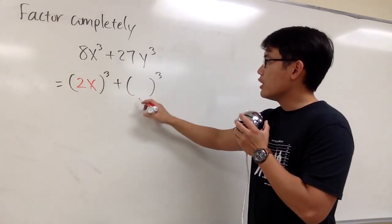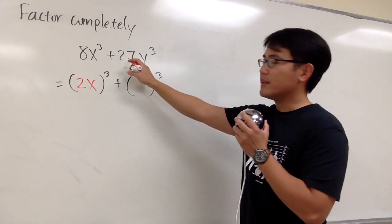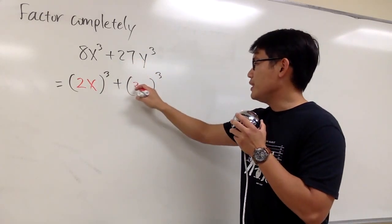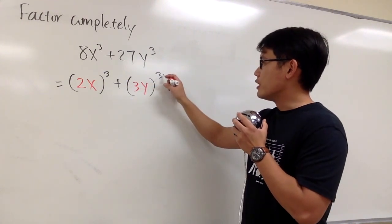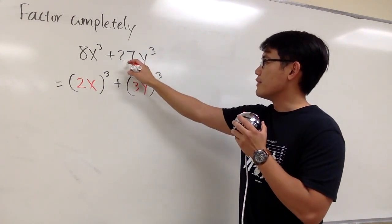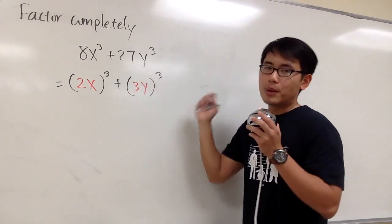And then for the second parentheses, what times what times what will give us 27? We need to have the 3. And then we also have the y. 3y³, 3³ is 27, and y³ is y³.